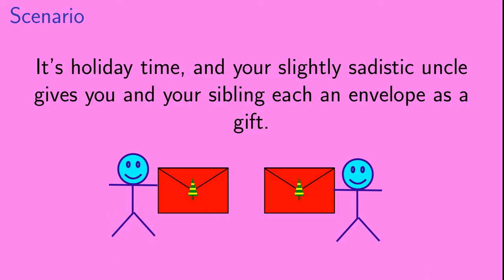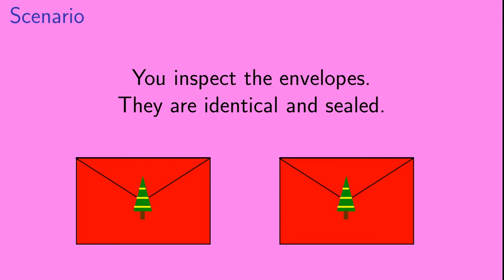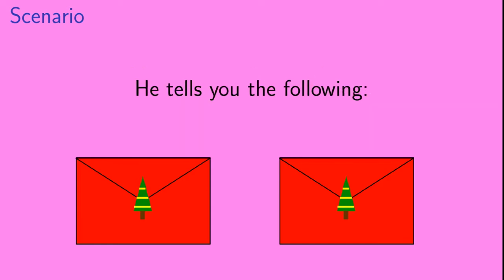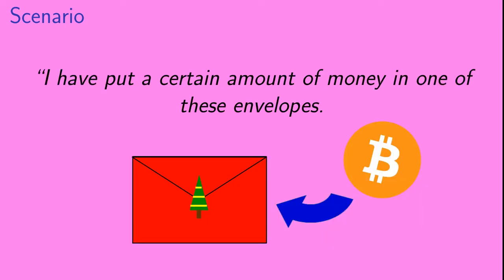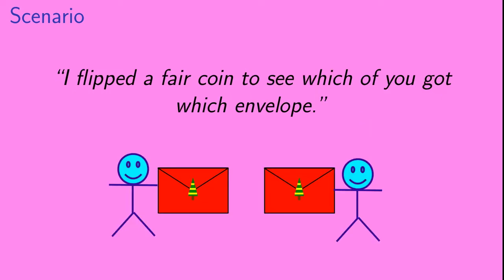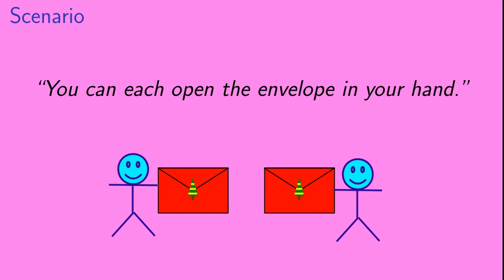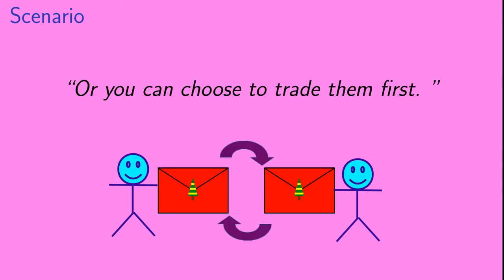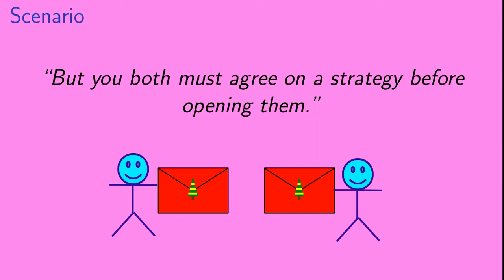It's holiday time and let's say that your slightly sadistic uncle gives you and your sibling each an envelope as a gift. You inspect the envelopes — they are identical and sealed. He tells you the following: I have put a certain amount of money in one of these envelopes. I put twice as much in the other envelope. I flipped a fair coin to see which of you got which envelope. You can each open the envelope in your hand, or you can choose to trade them first. But you both must agree on a strategy before opening them.